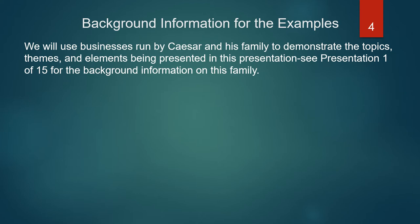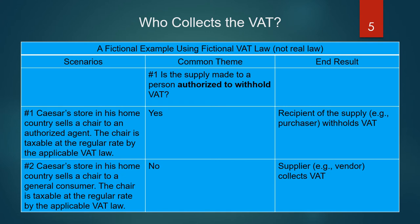We will use businesses run by Caesar and his family to demonstrate the topics, themes, and elements being presented in this presentation. Let's look at a fictional example using fictional VAT law. We have our scenarios, we have our common theme, and we have the end result of our analysis. To recap on the common theme: the tax is either collected by the person making the supply, or it's collected by an authorized agent who withholds the VAT and remits the VAT directly to the VAT authority.